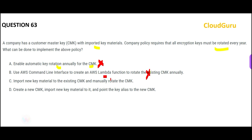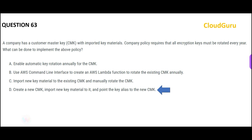Option B says to use CLI, create a Lambda function, and then rotate — you're trying to reinvent the wheel. Do not reinvent; use AWS services. This exam tests your AWS knowledge, not your ability to create custom solutions. Option C is wrong because it tells you to manually rotate the CMK. Option D simply works: create a new CMK, import the new key material, and point the key alias to the new CMK so your application still works — done every year. That is my final answer.